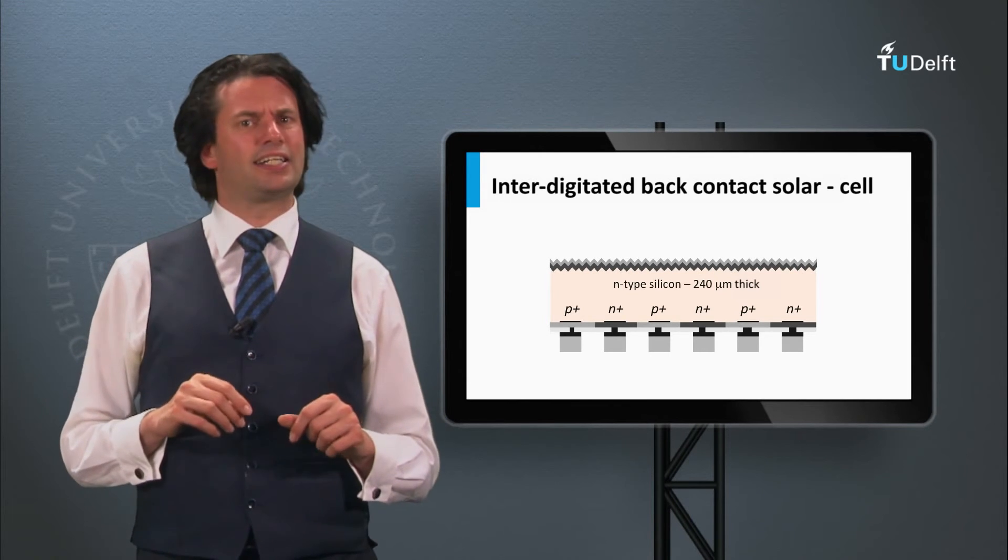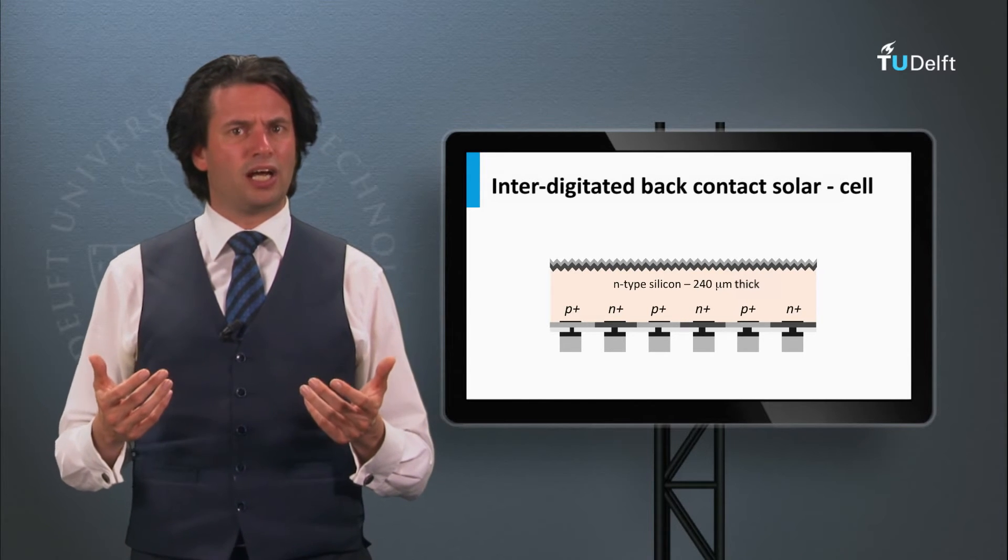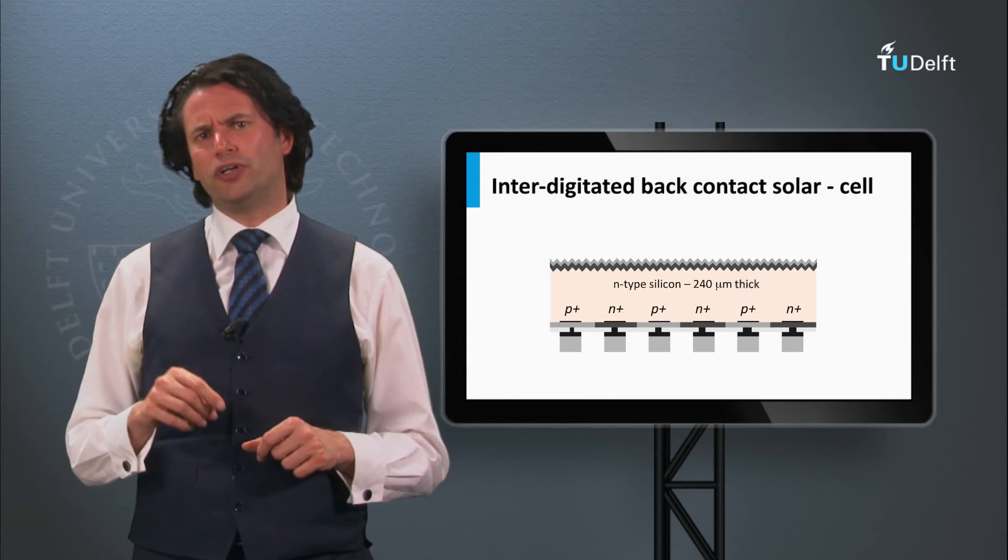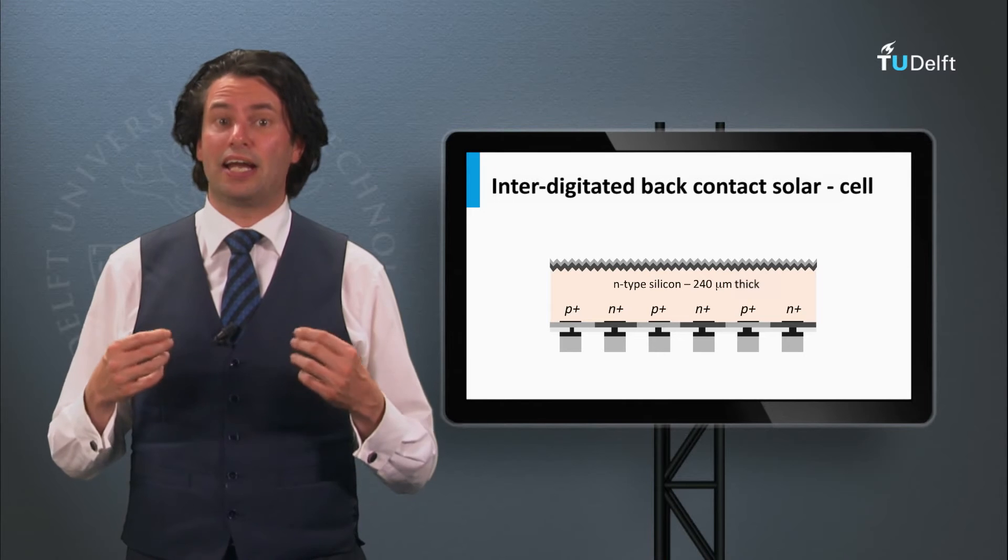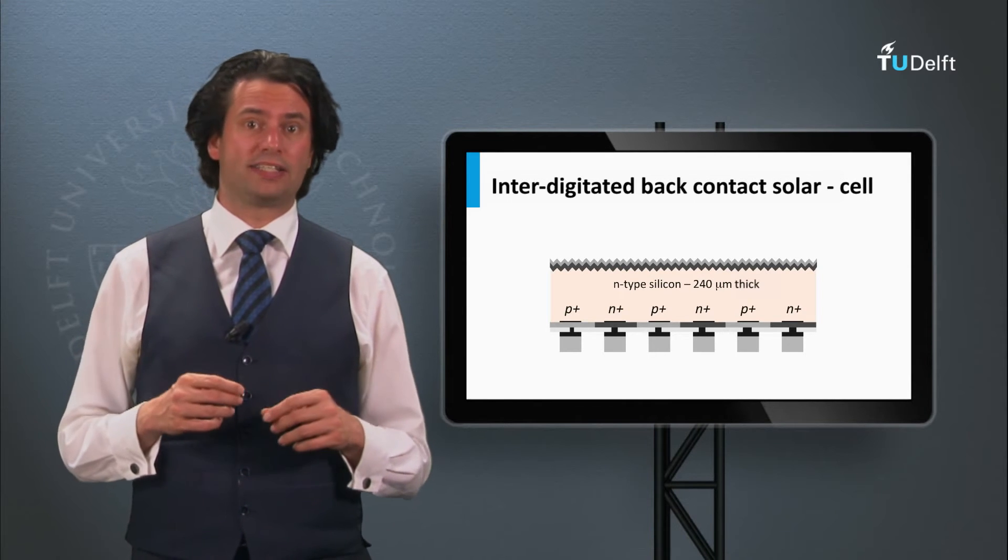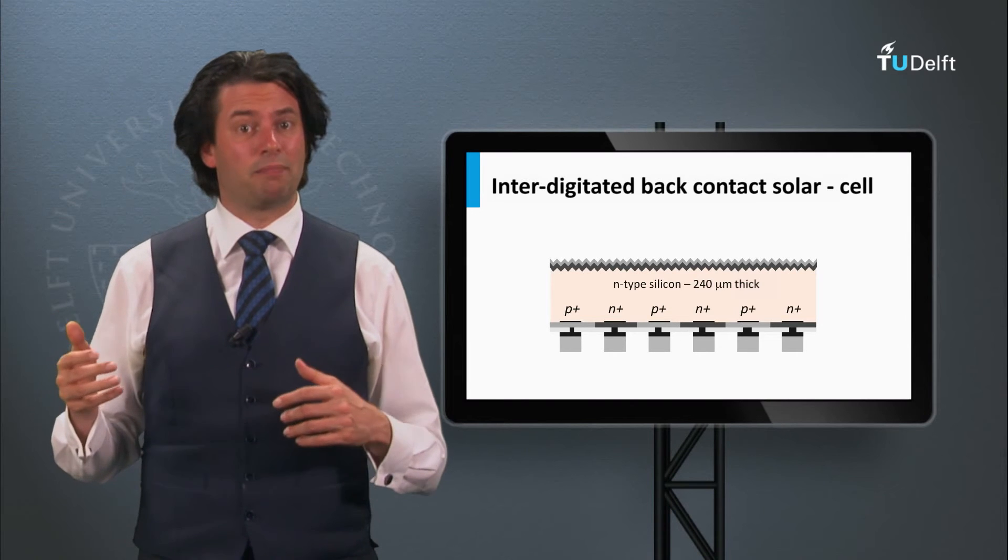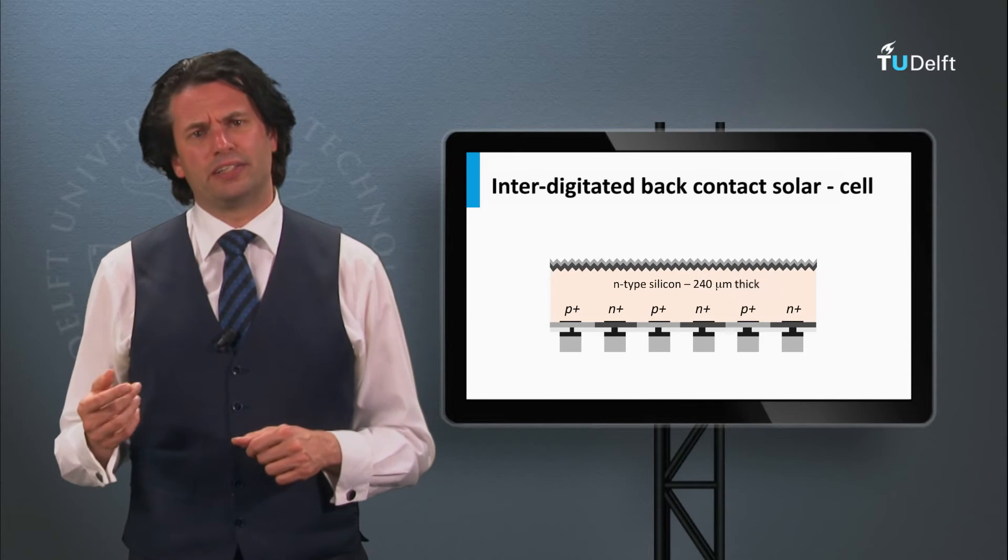The second advantage is that N-type silicon is not that sensitive for impurities like iron impurities. As a result, less efforts have to be made to make a high electronic quality of N-type silicon, meaning that high quality N-type silicon can be processed cheaper than P-type.